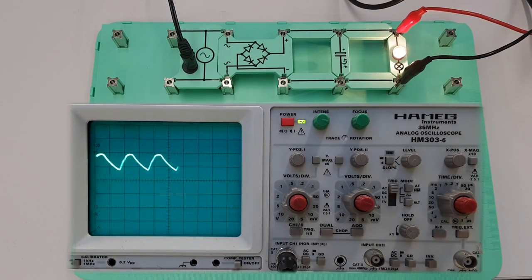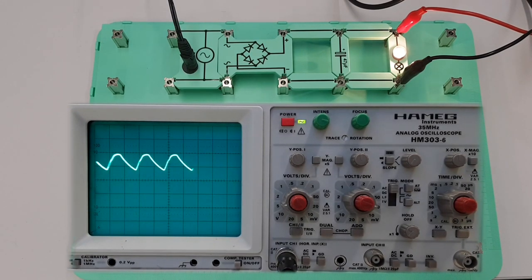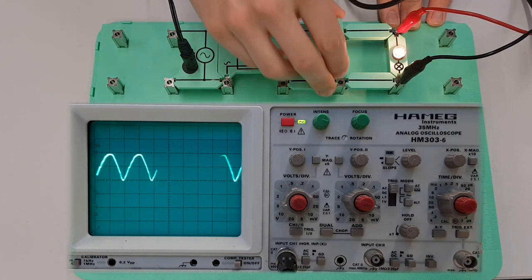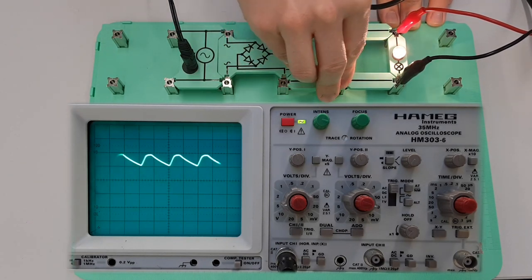That's really quite helpful because we've now got a smoother DC waveform, and we can actually make that even smoother by introducing larger values of capacitance.